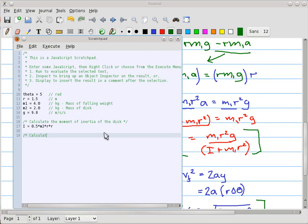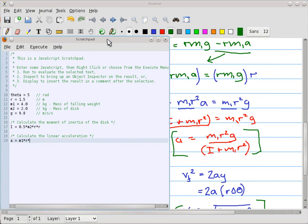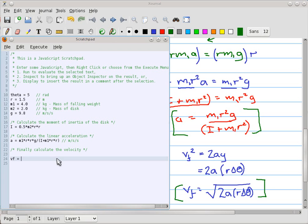Next, calculate the linear acceleration. So now what I'm going to do is I will use this formula. Let's scooch this over a little bit. So a equals m1 times r times r times g divided by parentheses i plus m1 times r times r. So this is going to be, of course, in meters per second per second. Finally, calculate the velocity. All right. So this is going to look like vf equals. Let's scroll down so we see the exact formula. And in JavaScript, we do math.sqrt math square root 2 times a times r times theta, close parentheses.